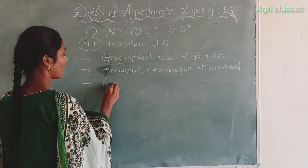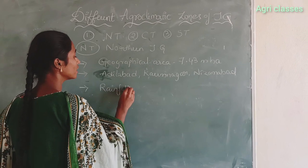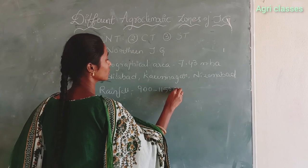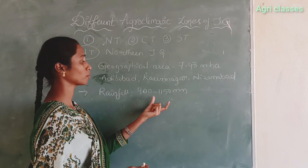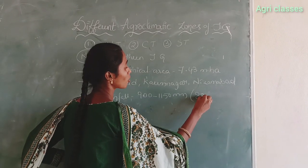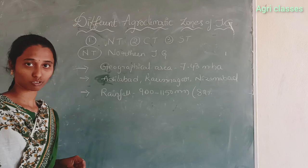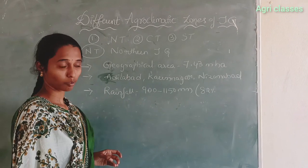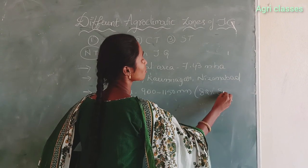The annual rainfall in the Northern Telangana zone is 900 to 1150 mm per annum. This region receives rainfall from both the north east monsoons and south west monsoons. 82% of the rainfall comes from the south west monsoons.